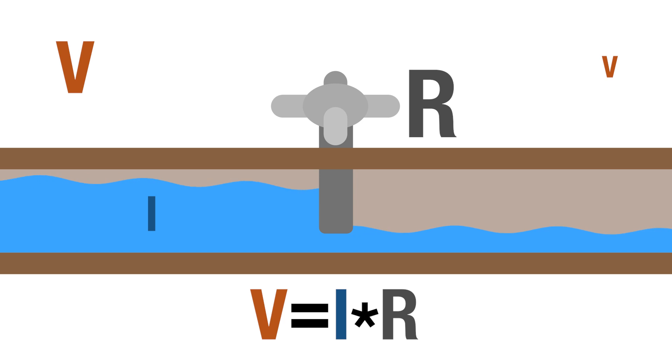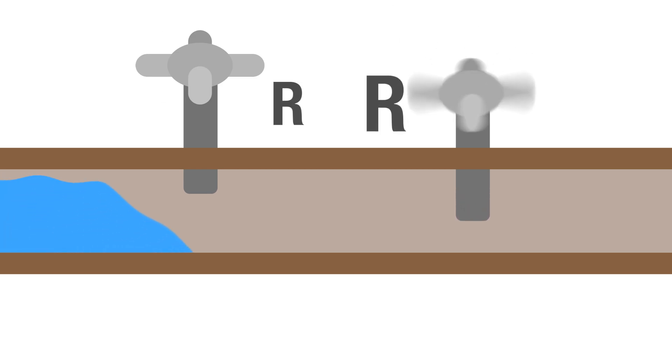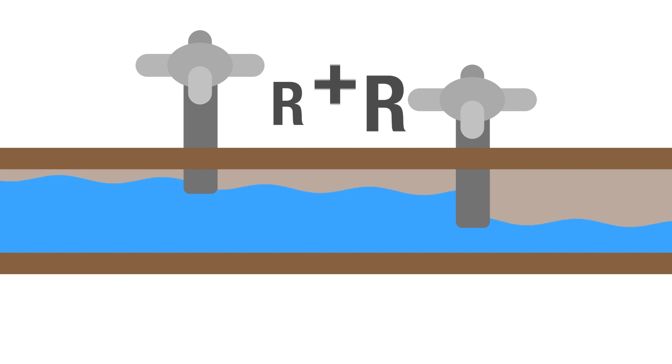Ohm's law tells us that the voltage is equal to the product of the current times the resistance. If we put two valves in series — one somewhat open and the other nearly shut — the resistance is simply the sum of the individual resistances. Important to note is that each valve or resistor experiences the same current flow, but a different voltage drop across each valve or resistor.